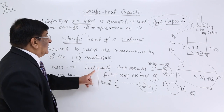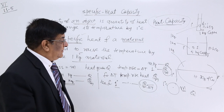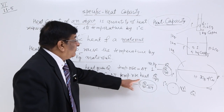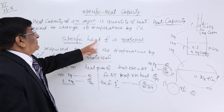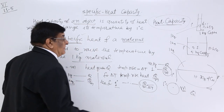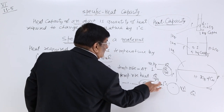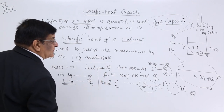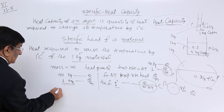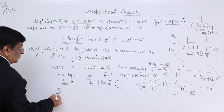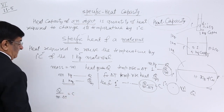Q is the heat given when the temperature rises by delta T. This quantity — for 1 kg, 1 degree — we call specific heat. Let us give it a symbol: specific heat C (or S). So: Q upon M into delta T is equal to C.